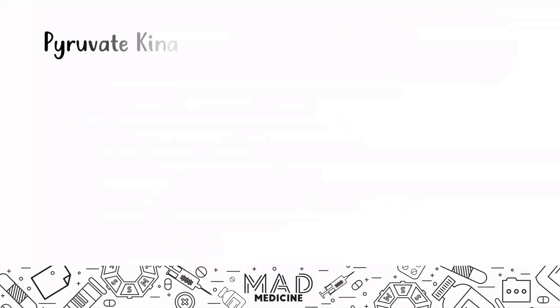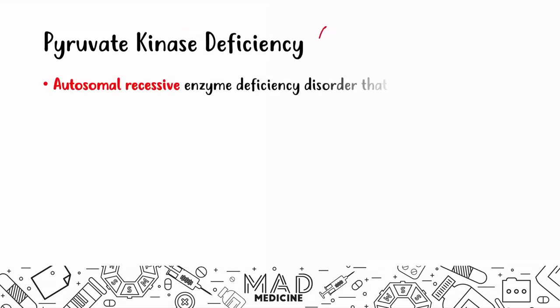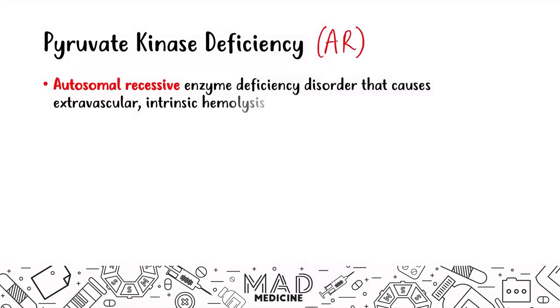Let's talk about pyruvate kinase deficiency. This is a disorder with an enzyme that is going to lead to intrinsic hemolysis. This is an autosomal recessive disorder — very important for Step 1 because they can ask you a percentage or probability to pass this disorder on. It is an autosomal recessive enzyme deficiency that causes extravascular, intrinsic hemolysis.